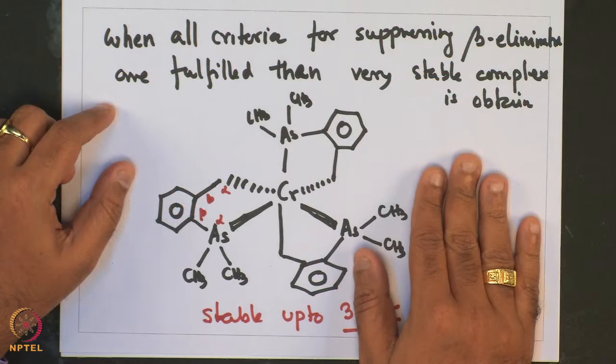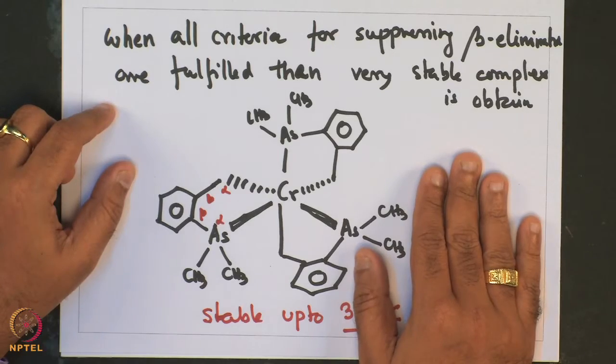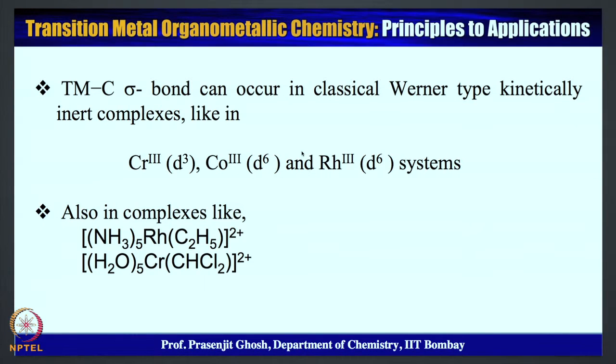The formation of this stable compound testifies that the approaches undertaken to inhibit beta elimination are successful, and one can obtain organometallic compounds that are extremely stable. This example also negates the belief that organometallic compounds are inherently thermodynamically unstable. It turns out that thermodynamic stability is not much of an issue; rather, kinetic reactivity — leading to the so-called observed instability — is the primary reason for their extremely high reactivity. This can be suppressed by obtaining a proper understanding of their decomposition pathway.